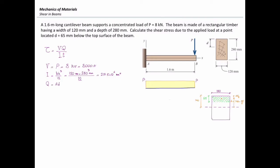Now I'm ready to go and calculate the value of Q for this problem. I just plug the values of A and D here. A is 65 times 120 and D is 140 minus 65 over 2. And the final answer for Q is 838.5 times 10 to the third millimeter cubed.